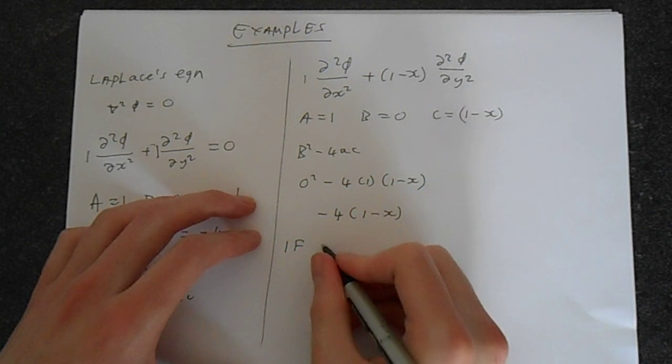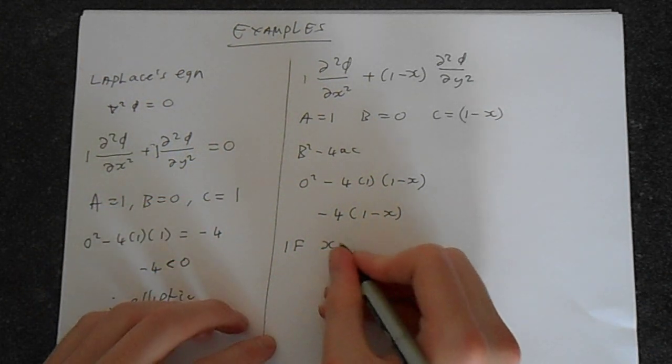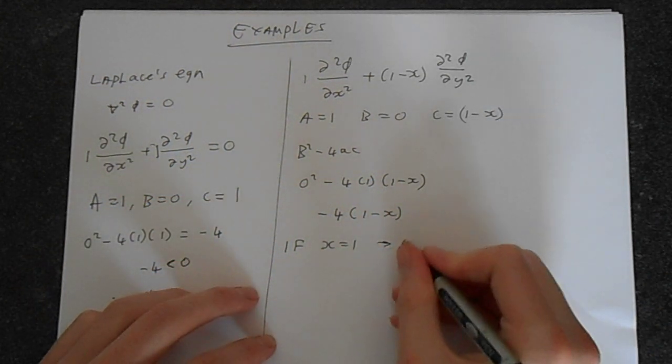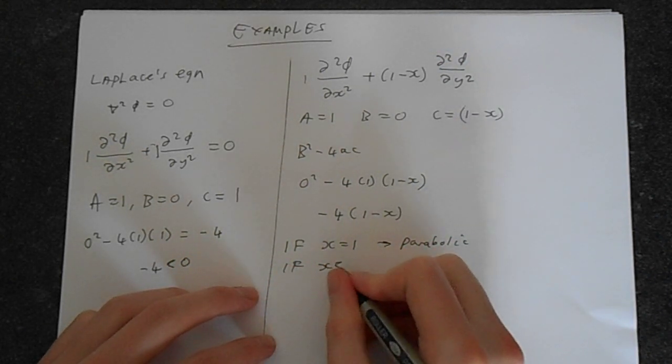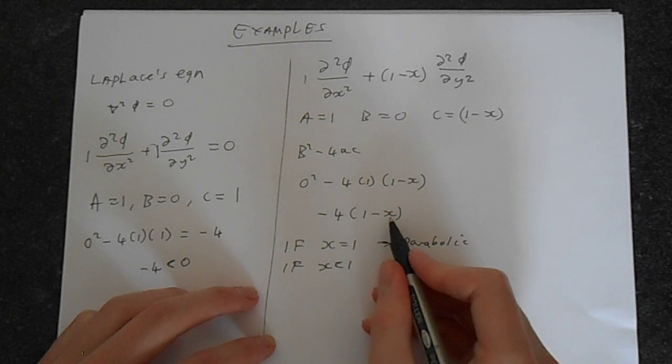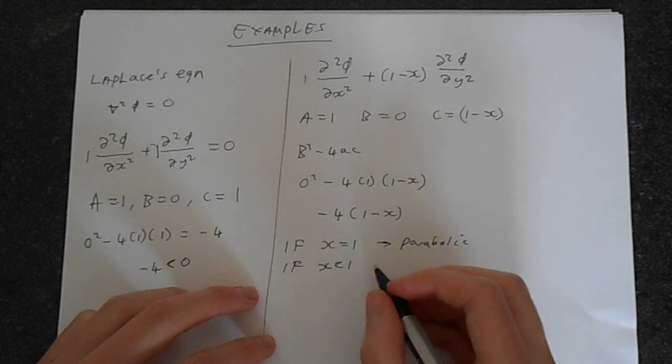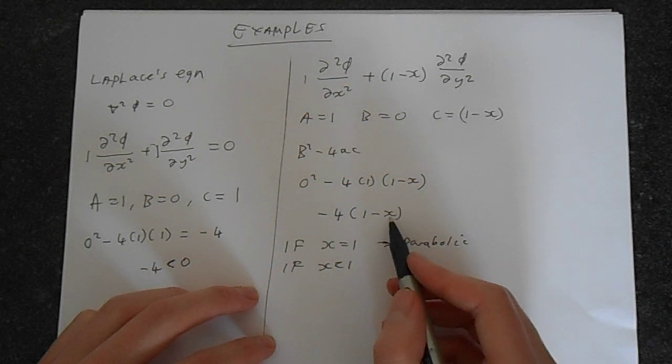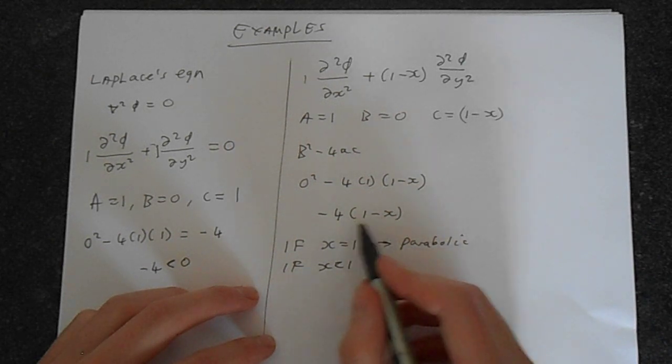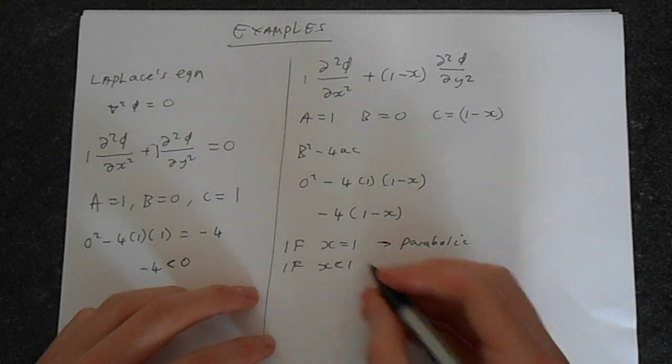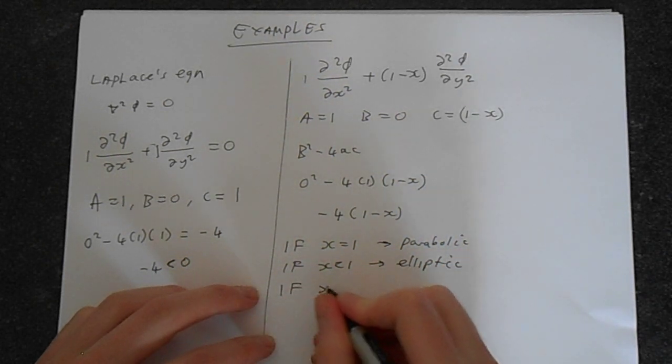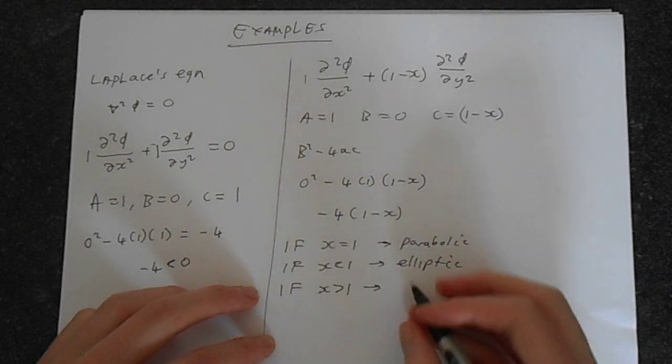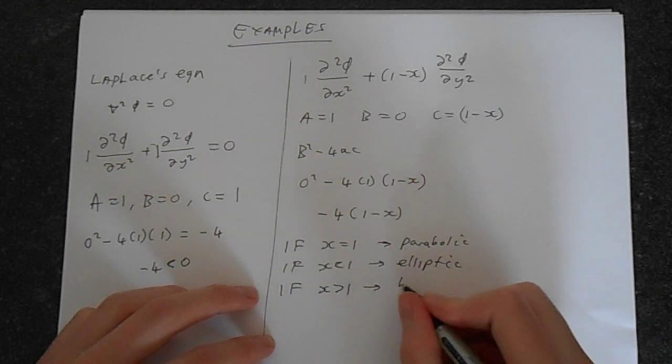So if x equals 1, it's going to be parabolic. If x is less than 1, this is going to make this elliptic, because this is always going to be negative. 1 minus anything less than 1 is going to make this whole thing negative. So that's going to give us an elliptic. And finally, if x is greater than 1, then we're going to have something that is hyperbolic.